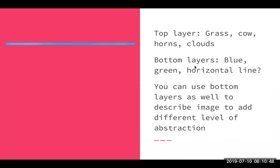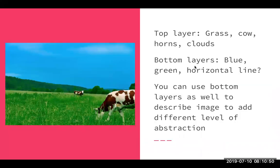And to give you an example of what this limitation looks like, here's an image and the final layers of an image of a convolutional neural network may describe this as a cow or horns or clouds. But a perfectly fine way, of course, to describe this image as well is just by saying something like blue, green, maybe horizontal line even. So the idea is that you could use these bottom layers as well to describe an image and to add a different level of abstraction. And this is what the authors do in this paper.